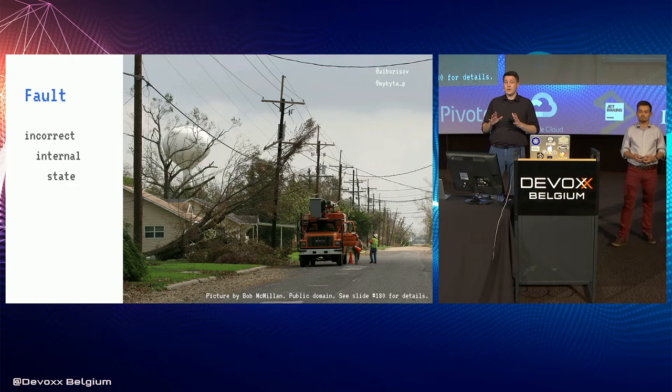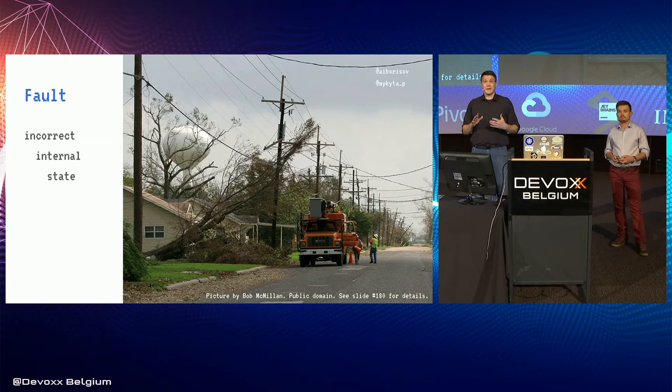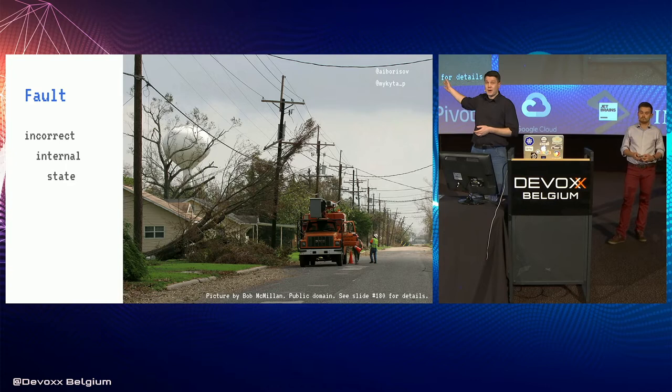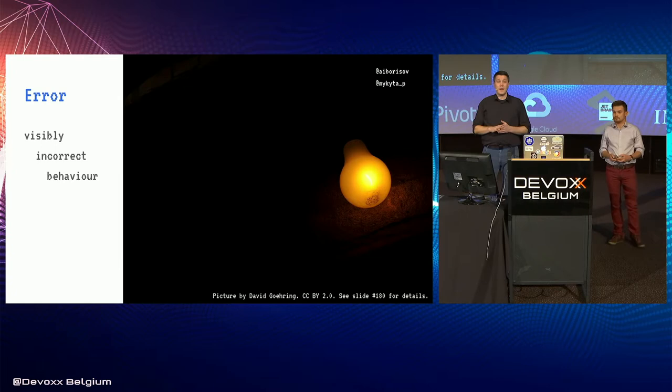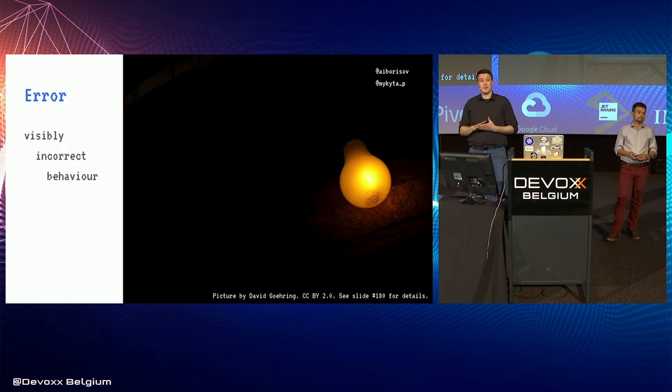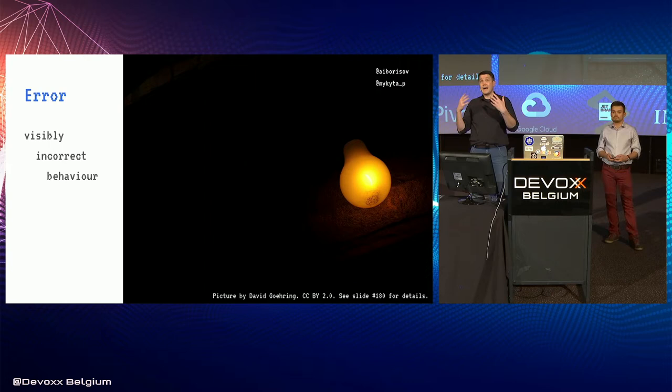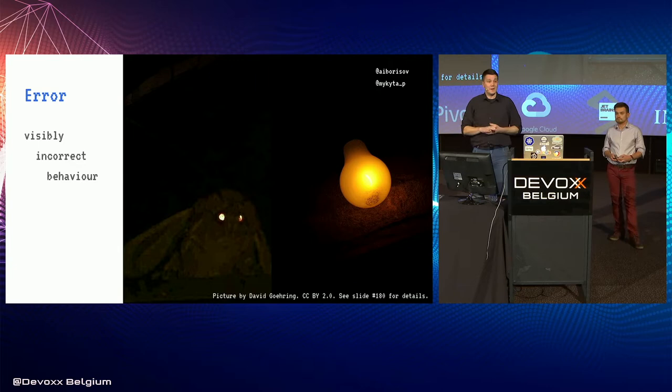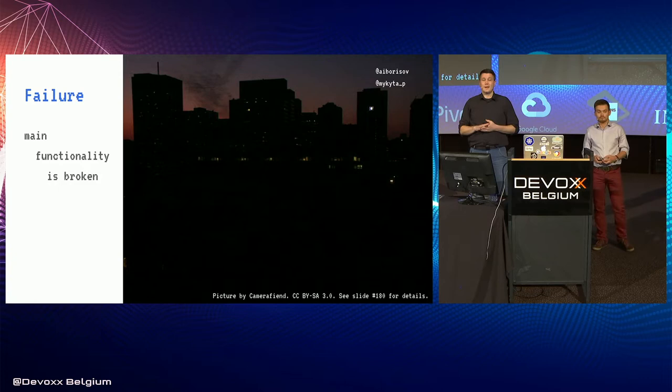A fault is an event of incorrect internal state of your system. High latency of your database is a fault. A hole in your spaceship is a fault. Trees hitting power lines are a fault, but it's not a failure yet — by itself, it's not even an error. An error is visibly incorrect behavior: when your system misbehaves and your user notices. It may be returning incorrect results, returning 500, or your lights may be flickering. Your users notice, but the system still works by and large.